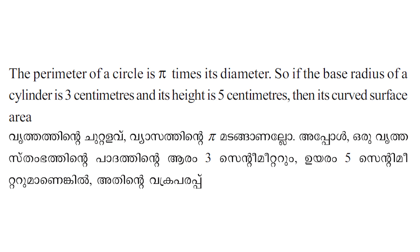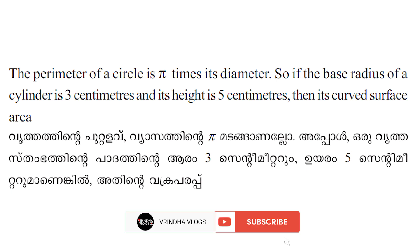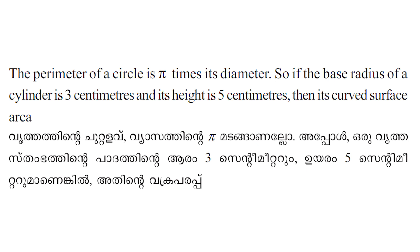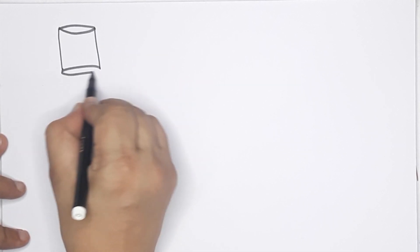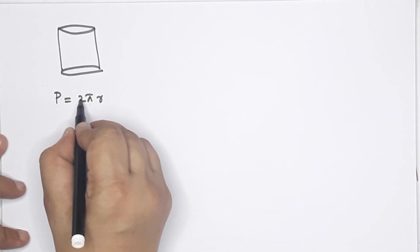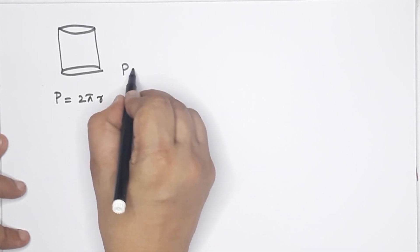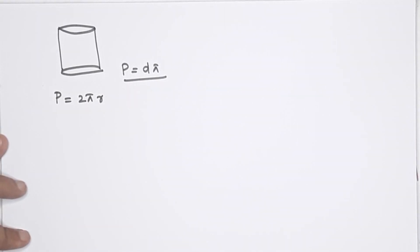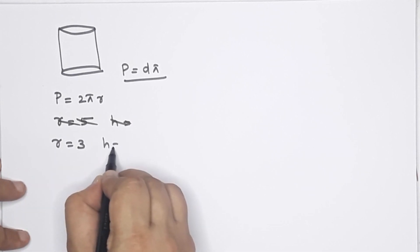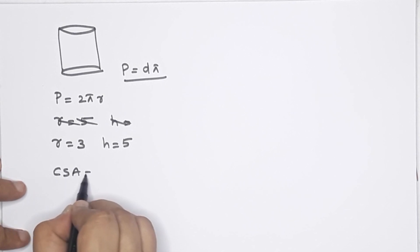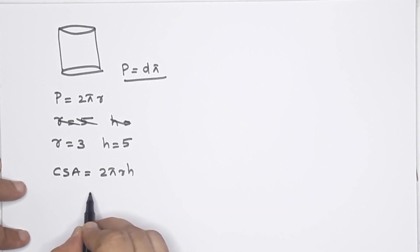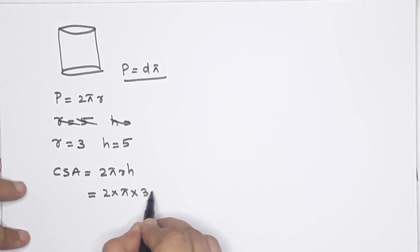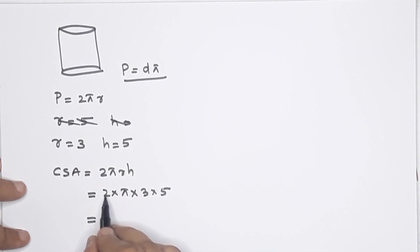Let's look at a worked example. The perimeter of a circle is π times its diameter. If the base radius of a cylinder is 3 centimeters and its height is 5 centimeters, find the CSA. Base perimeter is 2πr. Base radius equals 3, height equals 5. CSA equals 2πrh — that is 2 into π into 3 into 5, which equals 30π centimeters squared.